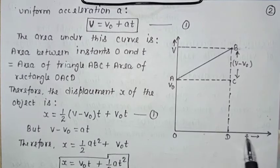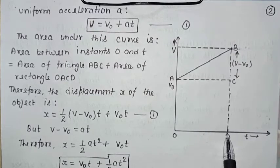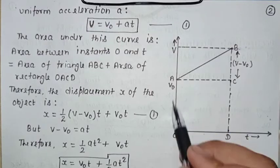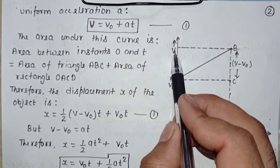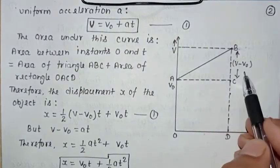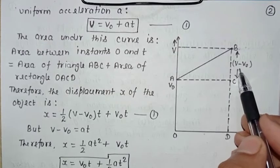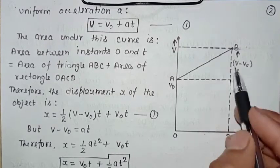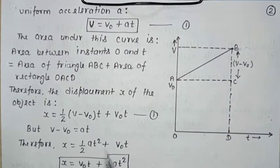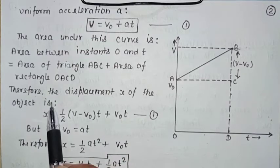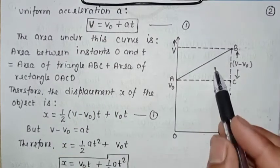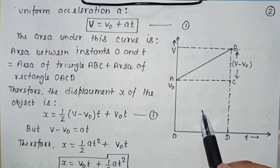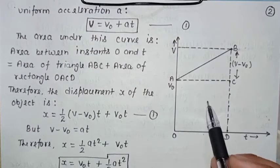With respect to change in time and change in position, there is some time. Initial velocity is V₀ and final velocity is V. The distance V − V₀ is shown. We will calculate the area here — area of the triangle and area of the rectangle.